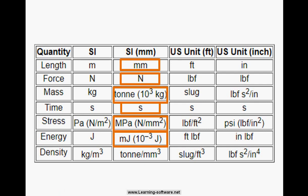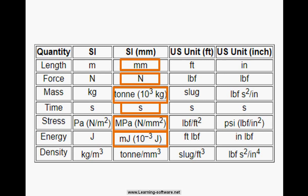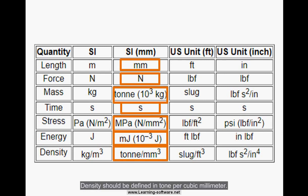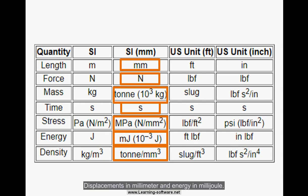Energy should be converted to millijoules. Density should be in tons per cubic millimeter, so you get the stress in megapascal, displacements in millimeters, and energy in millijoules.